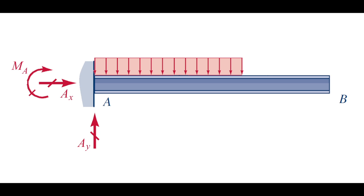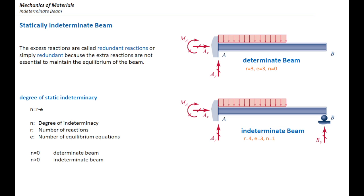What about this beam? This beam has one extra unknown on the right side, because it is restrained by a roller support. So here we have four unknowns, and four unknowns cannot be solved using three equations. So we call that an indeterminate beam. Generally, if we have more than three reaction forces, the problem would be indeterminate.